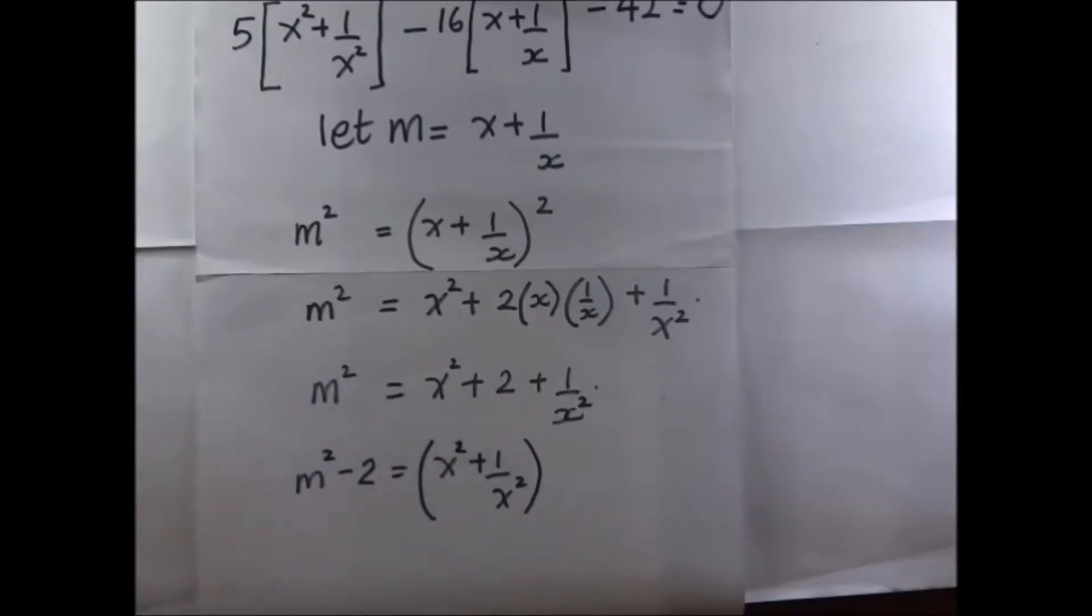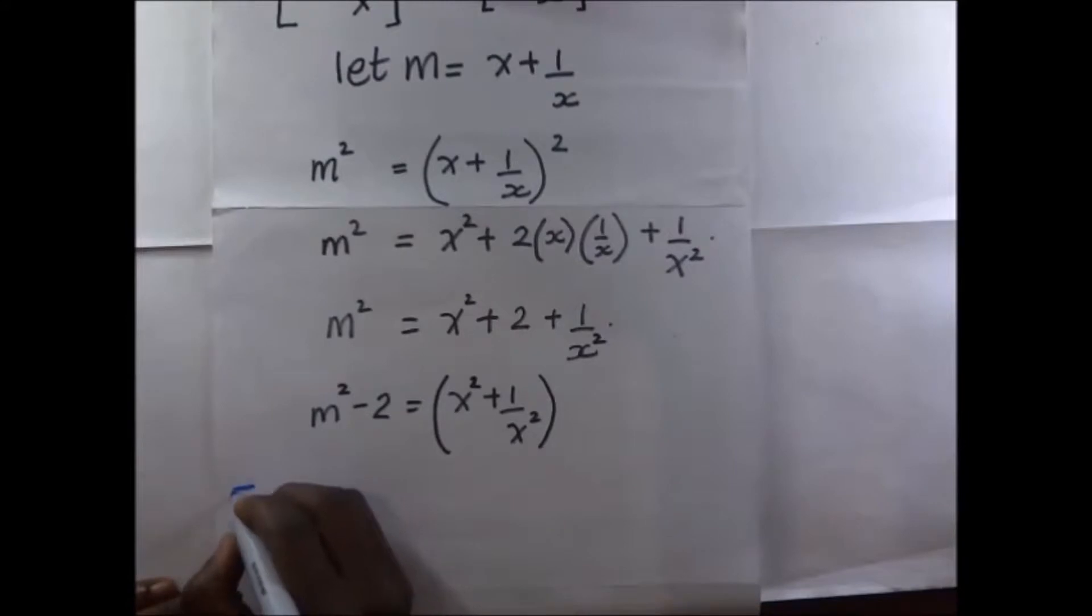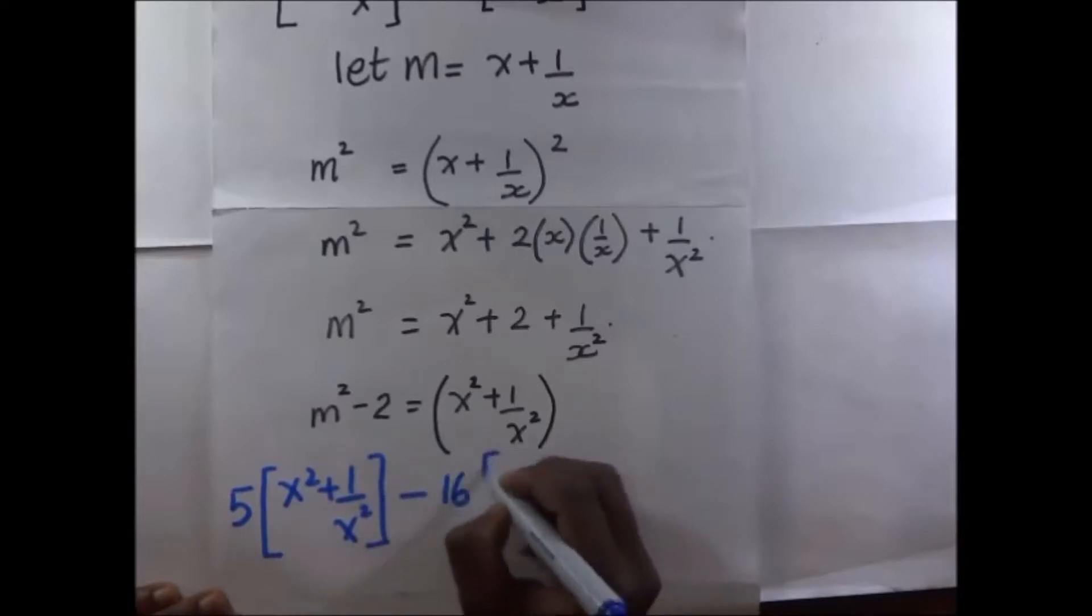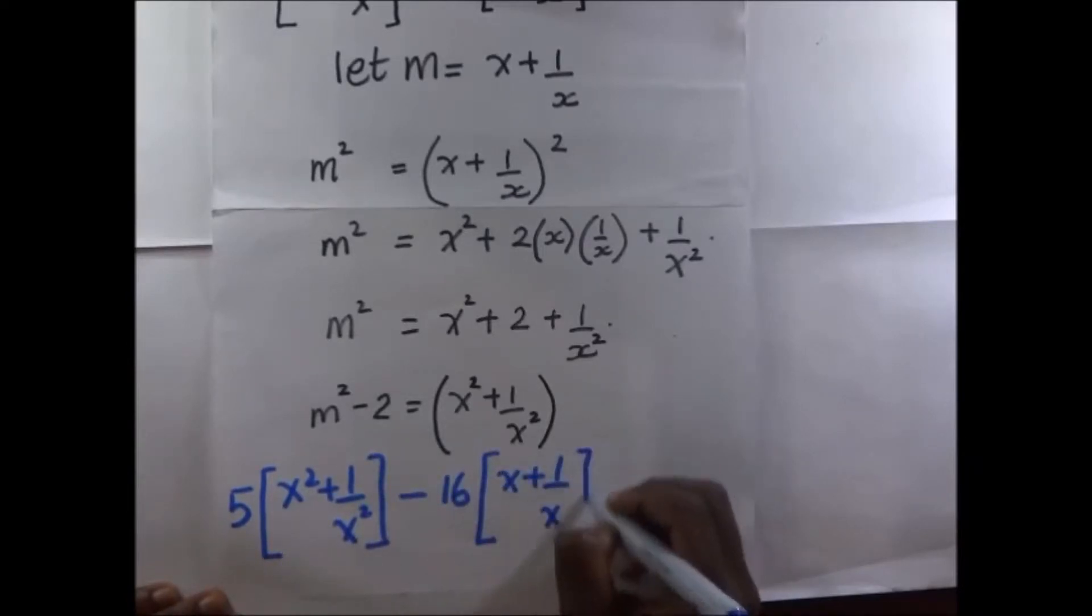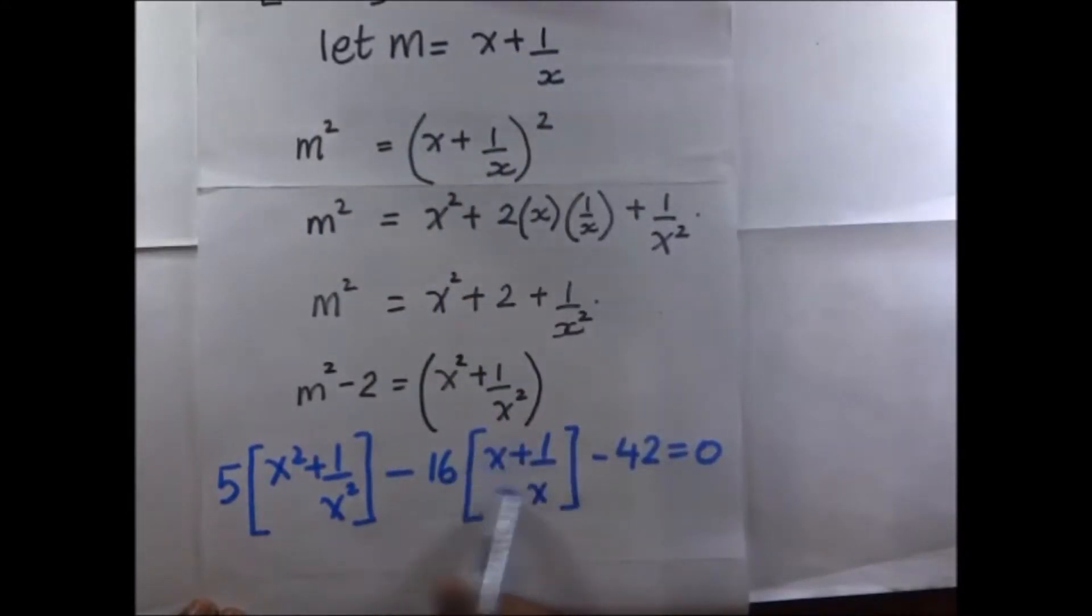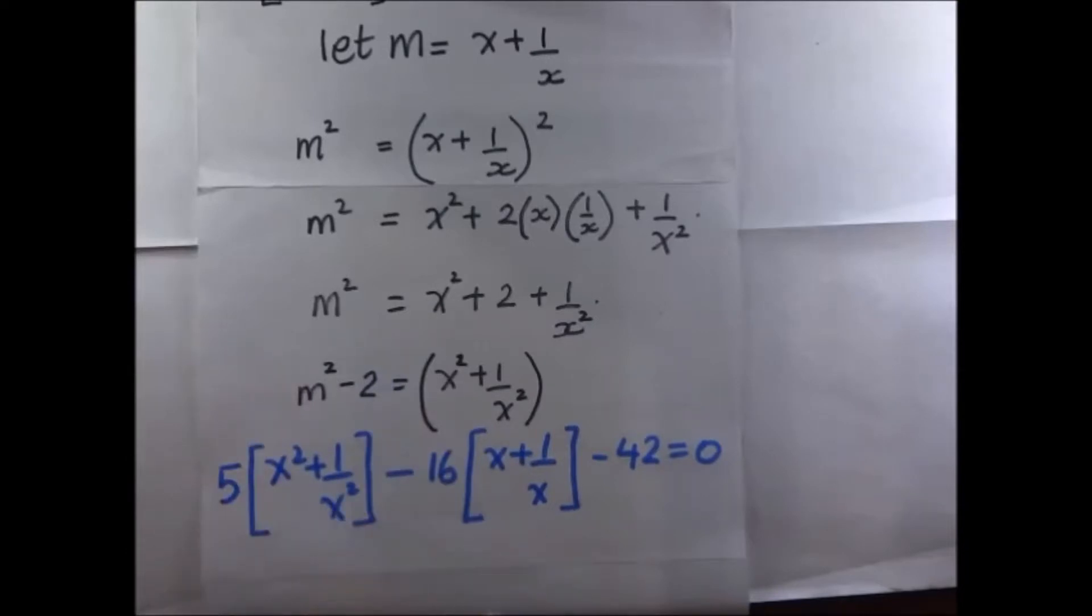And then our equation is going to become like this. Our equation was originally 5 into... Our value of M is x plus 1 over x, so this is going to become M. And M squared minus 2 is equal to x squared plus 1 over x squared. So this term, we are going to substitute for, and we simplify the equation.